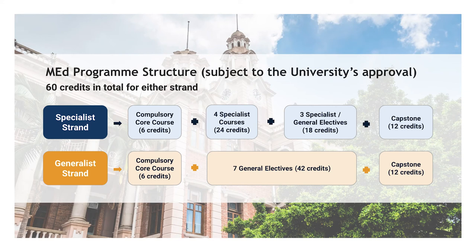In terms of program structure, both strands encompass 60 credits in total. The specialist strand has a compulsory core course of 6 credits, plus four specialist courses of 24 credits, plus three specialist or general electives of 18 credits, and 12 credits from the capstone. The generalist strand has a different structure: a compulsory core course of 6 credits, plus seven general electives of 42 credits, plus the capstone of 12 credits.